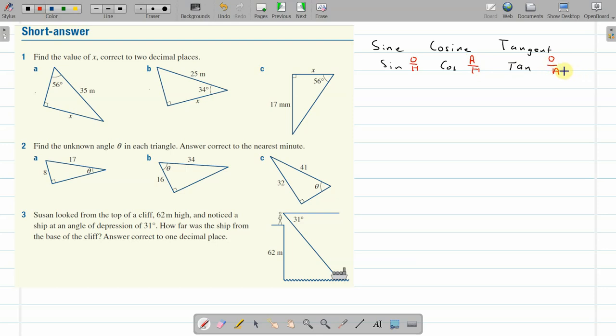And it all hinges on where the angle is that's in question. Because each trig question using the right-angle trig features gives you three bits of information. Let's have a look at 1A. In here we have three bits of information. We have our angle, so theta equals 56 degrees.